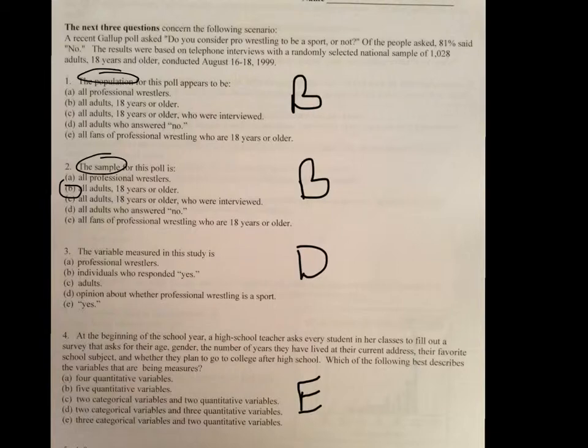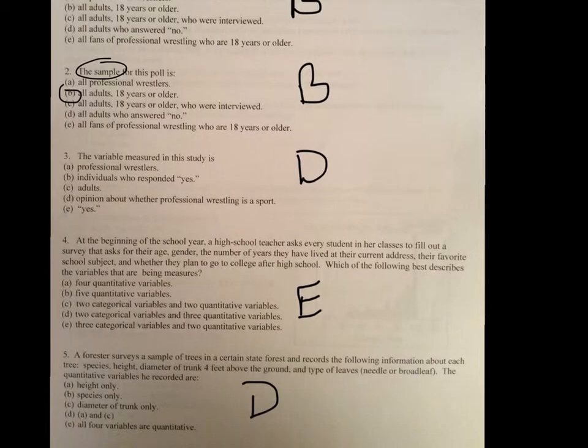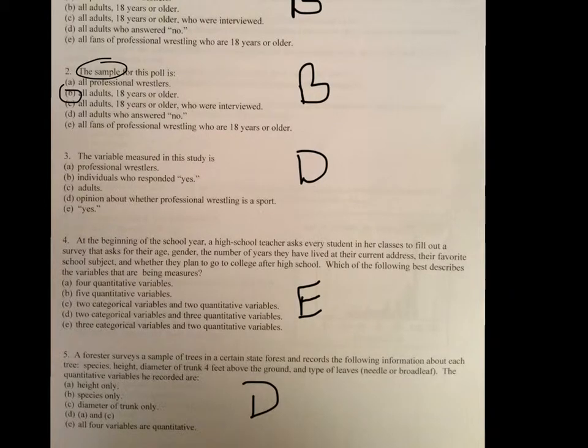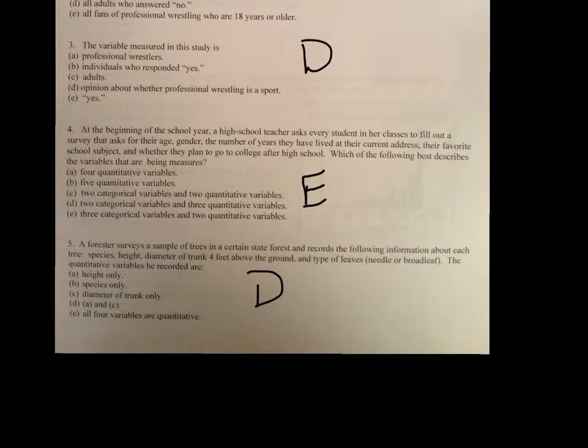On number three, know what the variable is and make sure you understand whether it's categorical or quantitative. When you look at number four, again, it's asking which of the following best describes the variables. Again, there were three categorical and two quantitative. Remember, quantitative, you can take the average and categorical are like types of cars or colors, things like that, things that you can't take an average of.